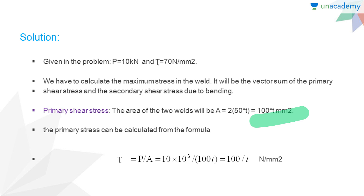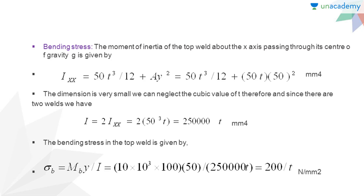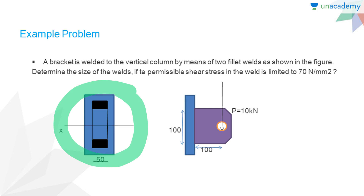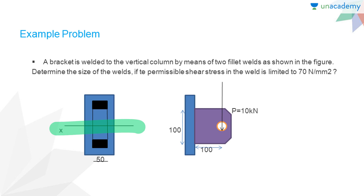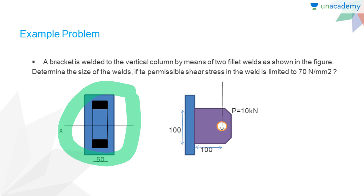Now we have to calculate the secondary shear stress, which is caused by the bending stress acting at the weld part of the vertical column. For the calculation of bending stress, we have to calculate the second moment of area of the weld pattern. We need to calculate the second moment of area along the I_XX direction for this weld pattern.